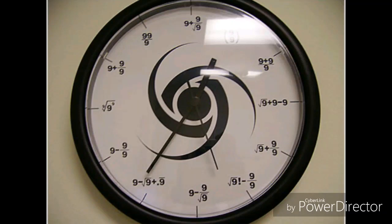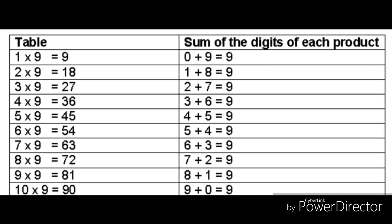I wanted to ask you about 9,9,99. Has that got something to do with Y2K or is something going to happen on that? 9,9,99 is really the mathematical figure 9 to the 9th power of 9. That's the largest figure you can calculate because the highest number is 9. Anything else — any numbers above 9 — are compound numbers.